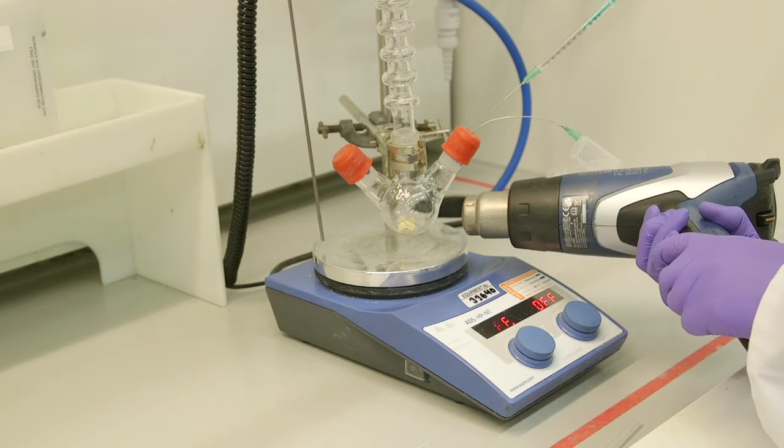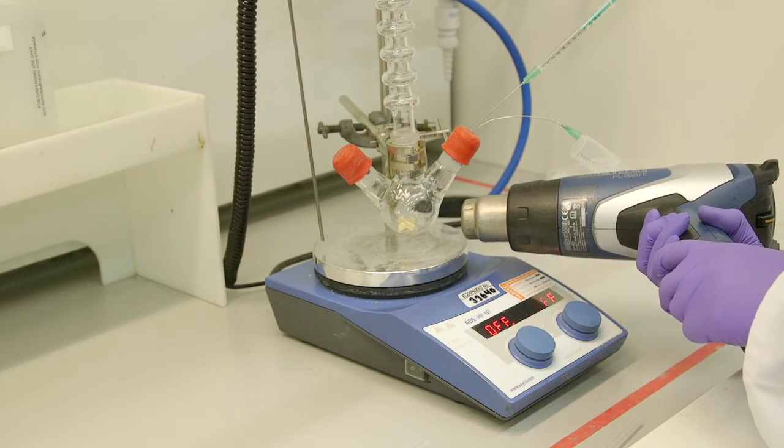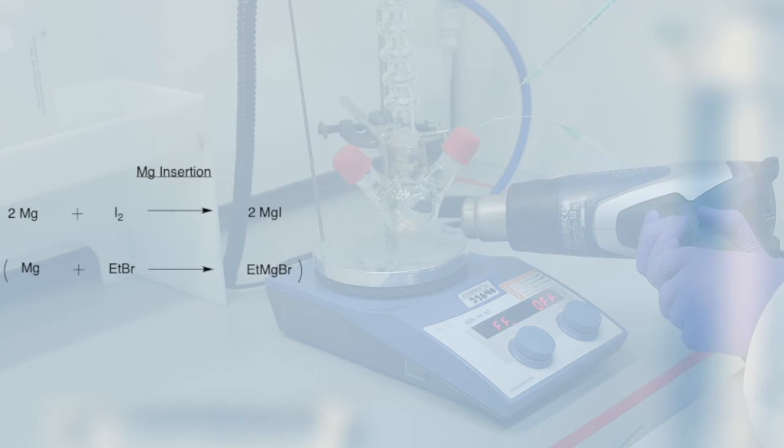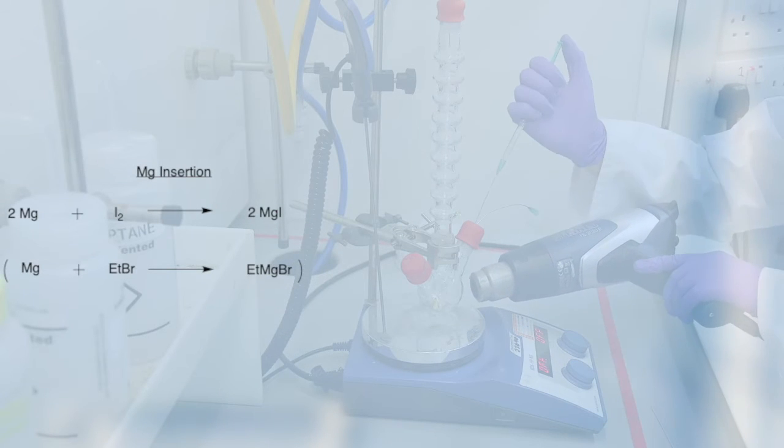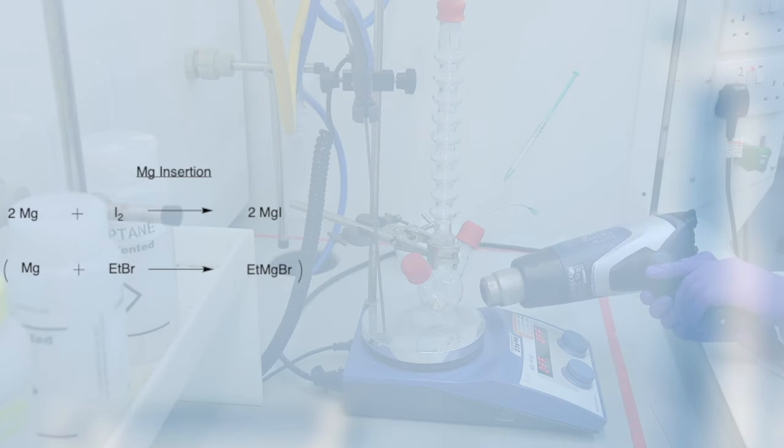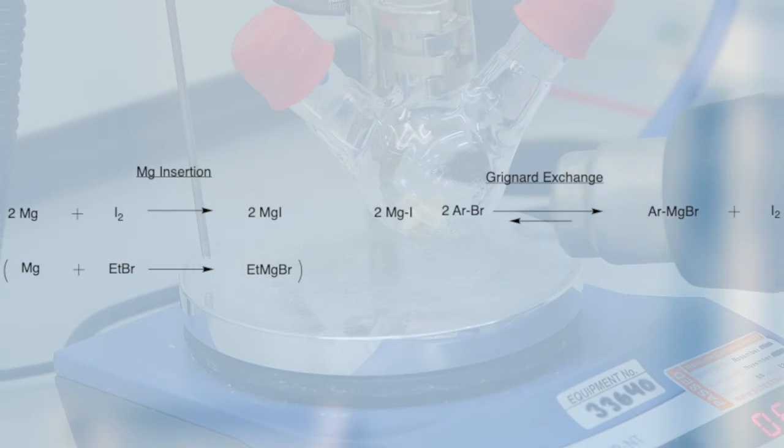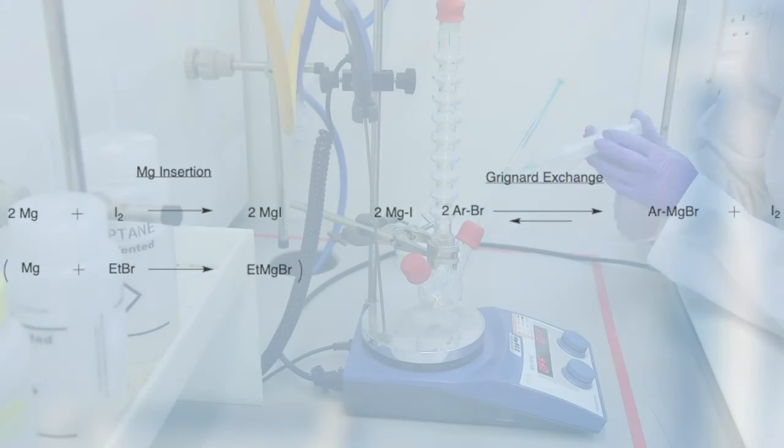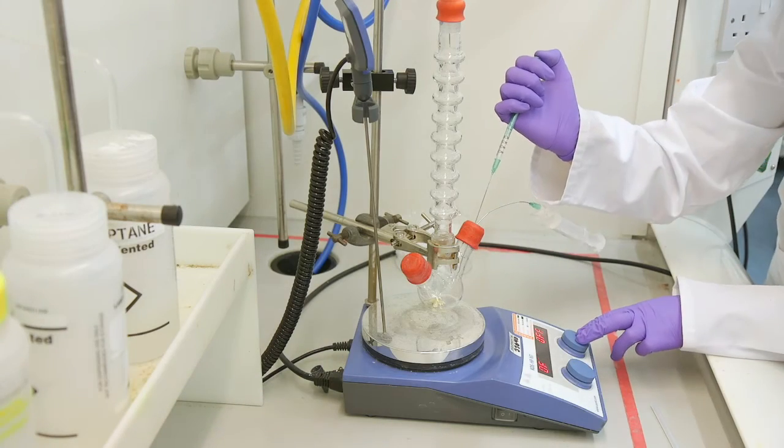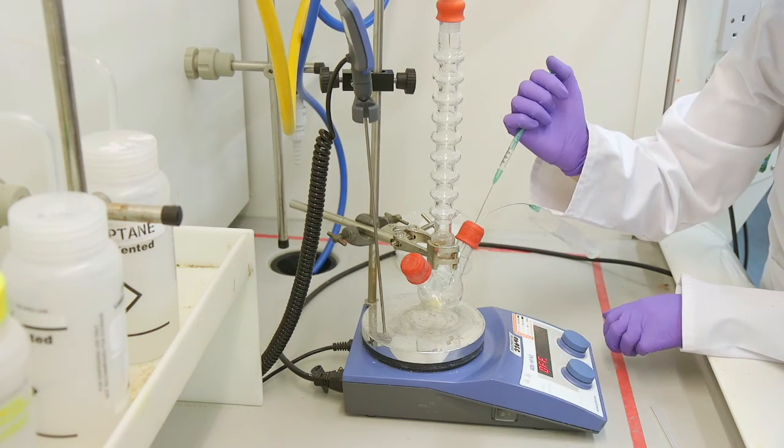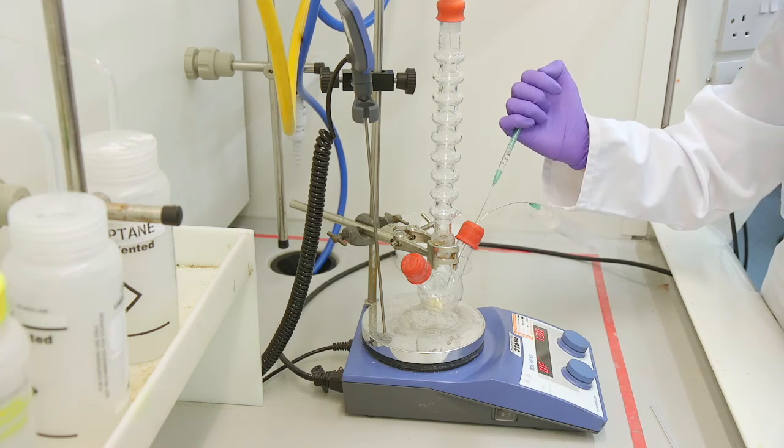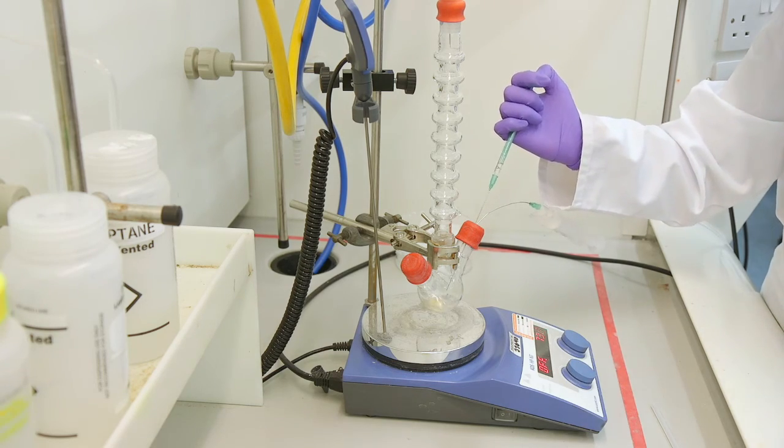If no heat is evident the reaction may need an activator. An activator can be iodine either in drop or pellet form or ethyl bromide. Iodine is more reactive than the bromide on our substrate so this will insert first. Then you will get a transmetallation taking place for the Grignard formation. If you want to add an activator to the reaction make sure this has been added before the addition of most of your substrate otherwise you will lose most of your substrate.